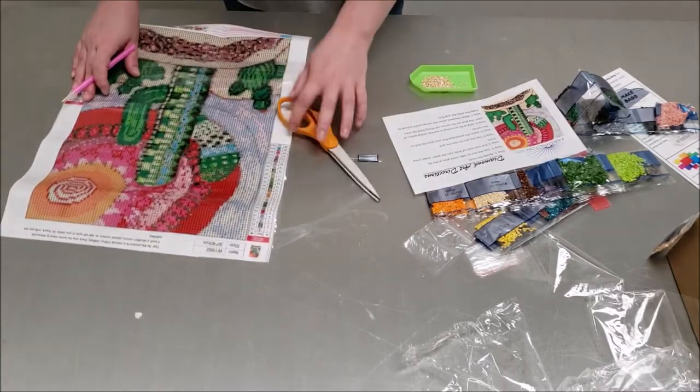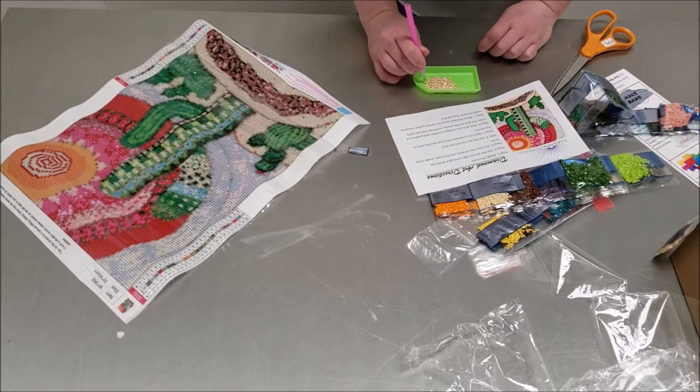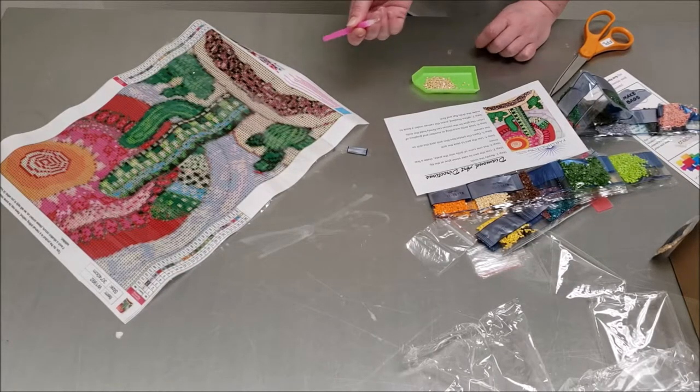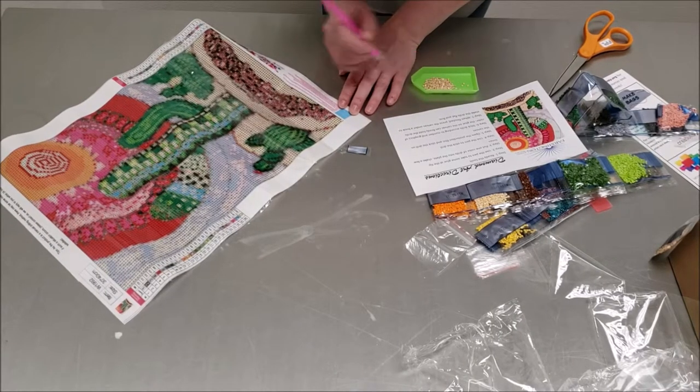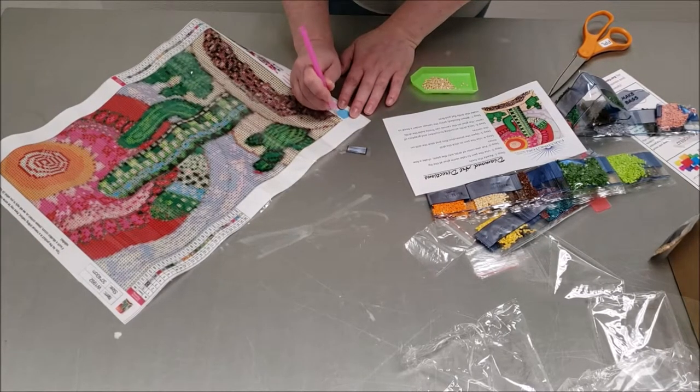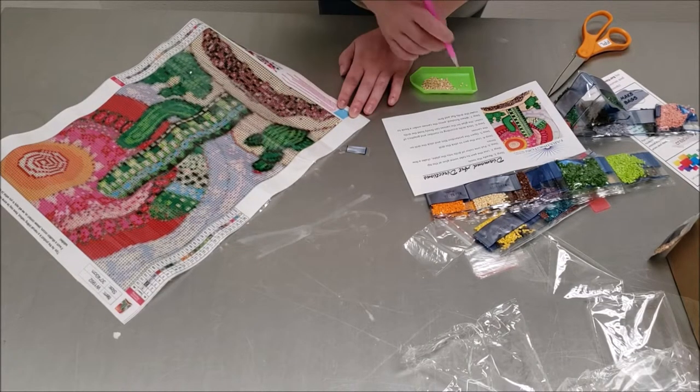So open the bag and pour some out. And we have our glue already on the tip. We're going to take one of these beautiful diamonds and place it on the nine where it belongs.